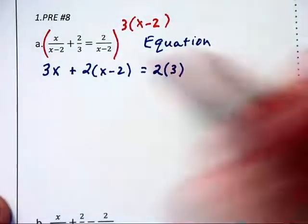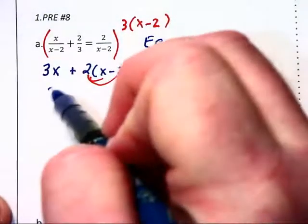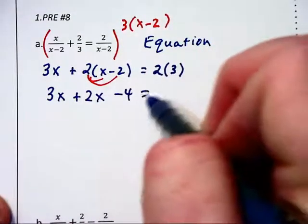So let's do some distribution on the left. We are going to have 3x + 2x - 4 = 6.